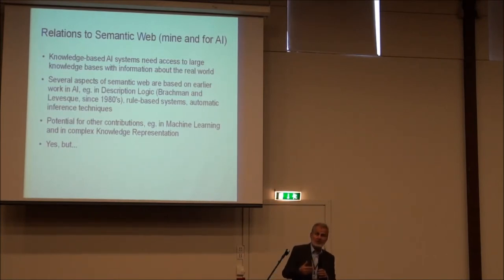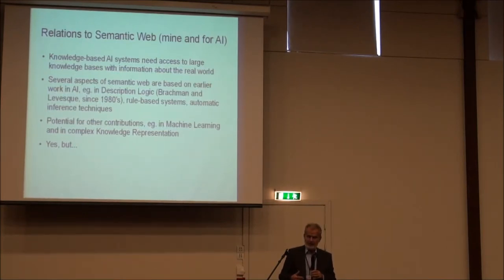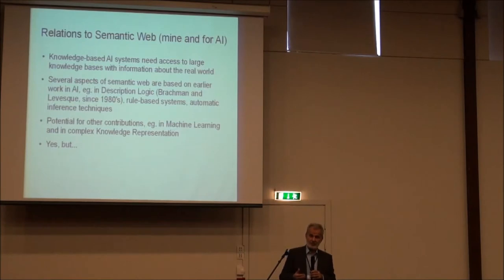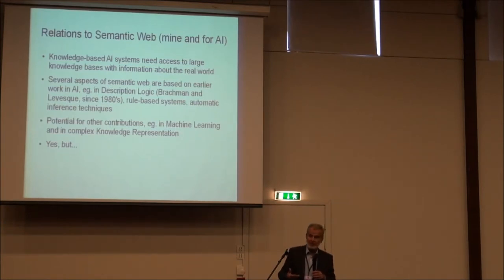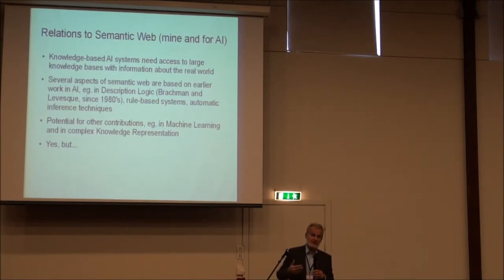There are a number of connection points. At this point, the AI community in general views the development in the semantic web as a fantastic resource. For many years in the 80s and 90s, we said that intelligent systems obviously need a knowledge background and must have a knowledge base — but where do we get it from? How can we obtain all the knowledge required in a truly intelligent system? For a long time it seemed very difficult and very costly. And now, during the last five years or so, we have an enormous volume of knowledge accumulated in the semantic web movement.